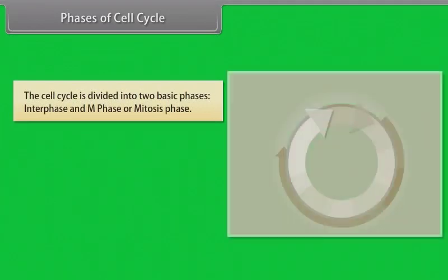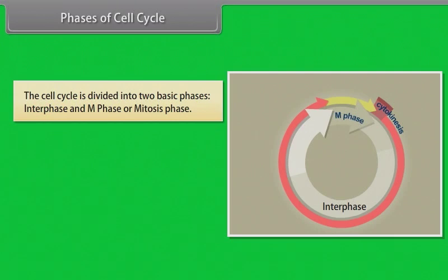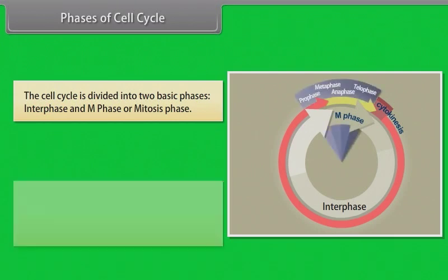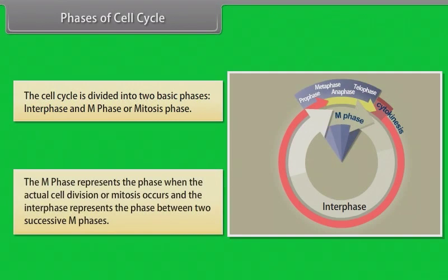The cell cycle is divided into two basic phases: Interphase and M phase or mitosis phase. The M phase represents the phase when the actual cell division or mitosis occurs, and the interphase represents the phase between two successive M phases.